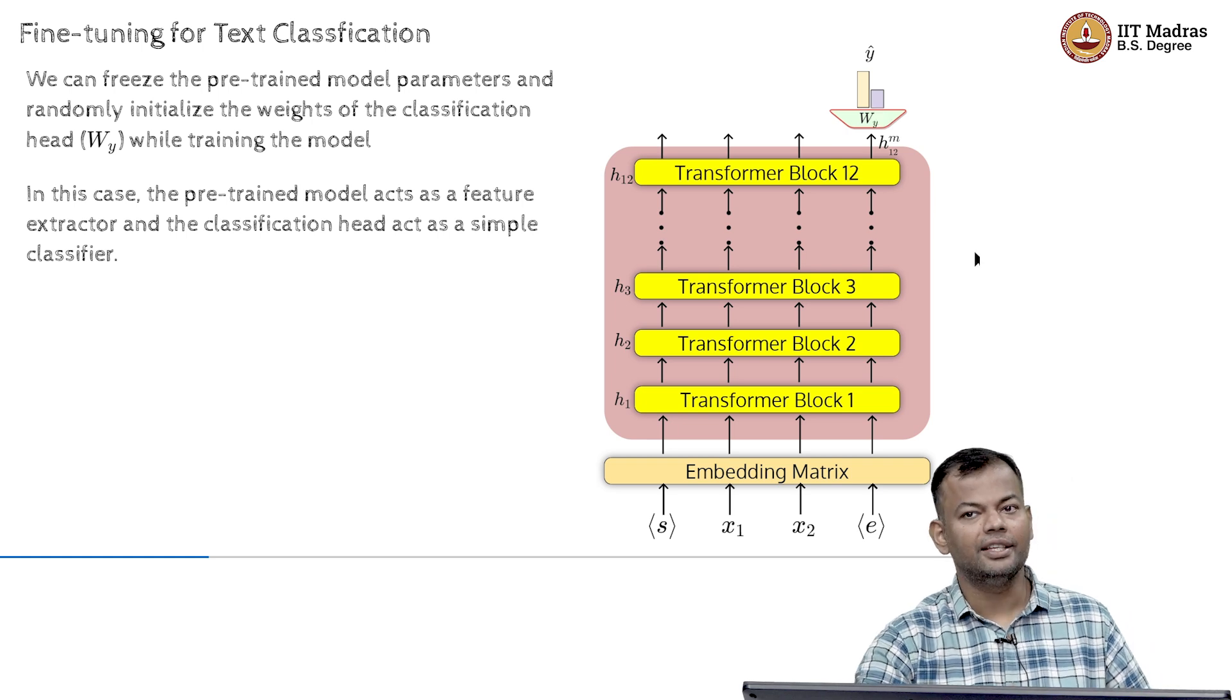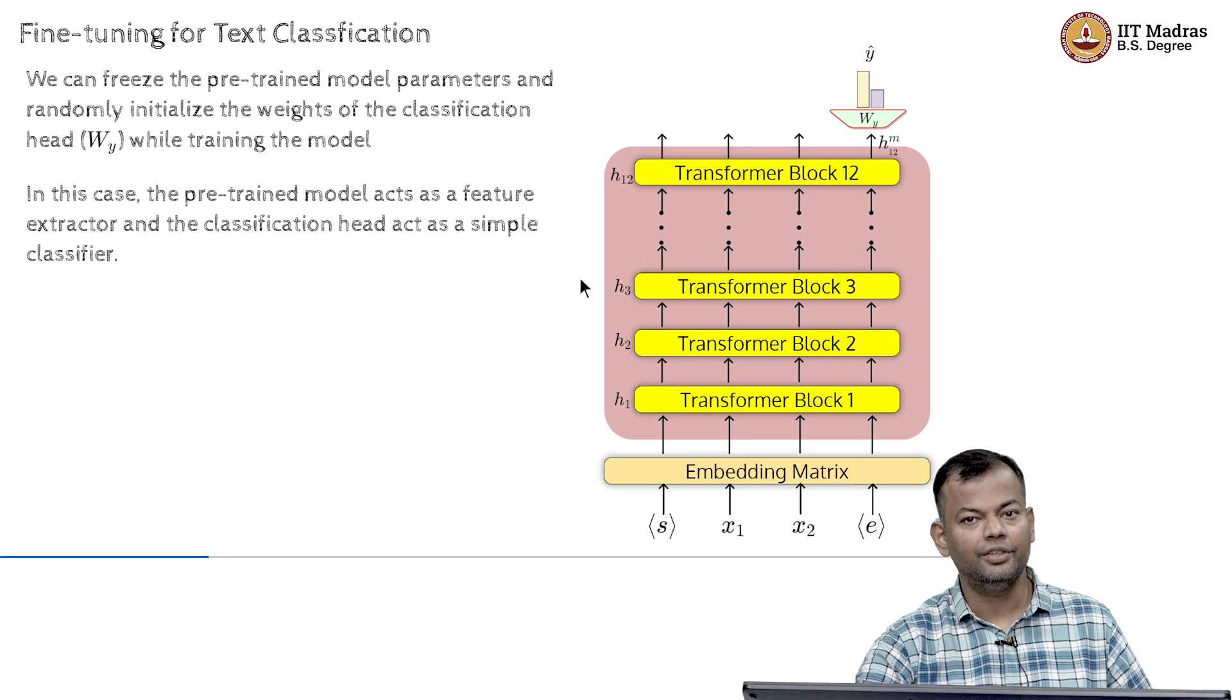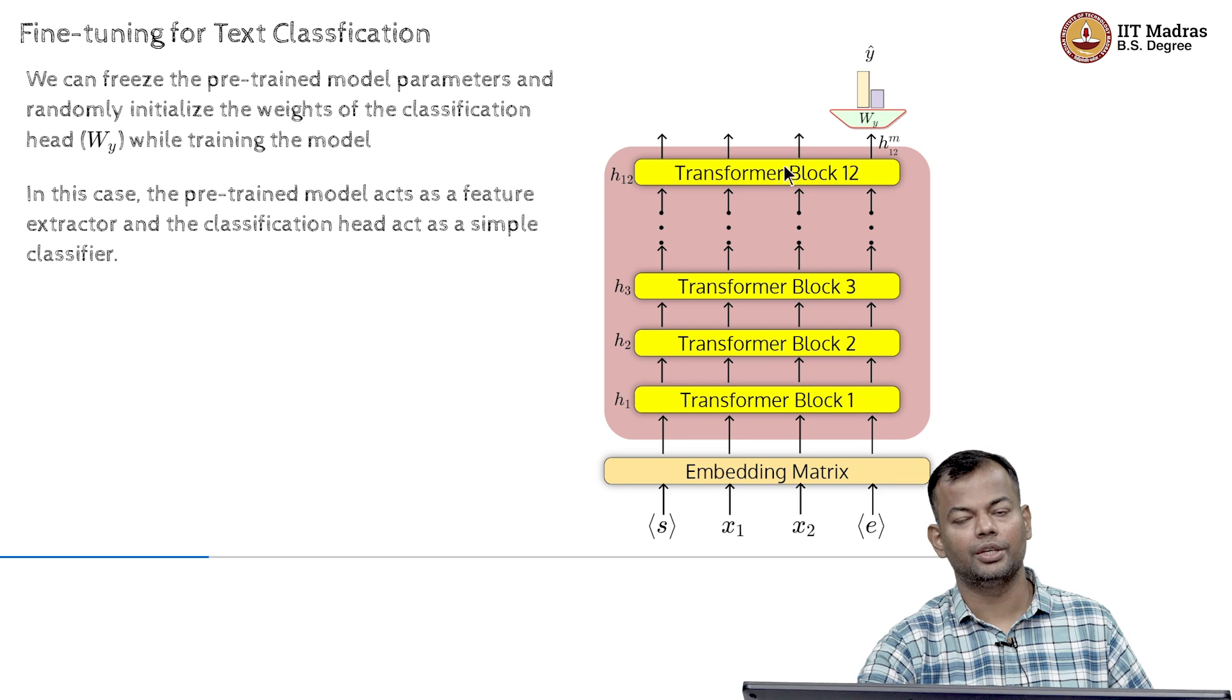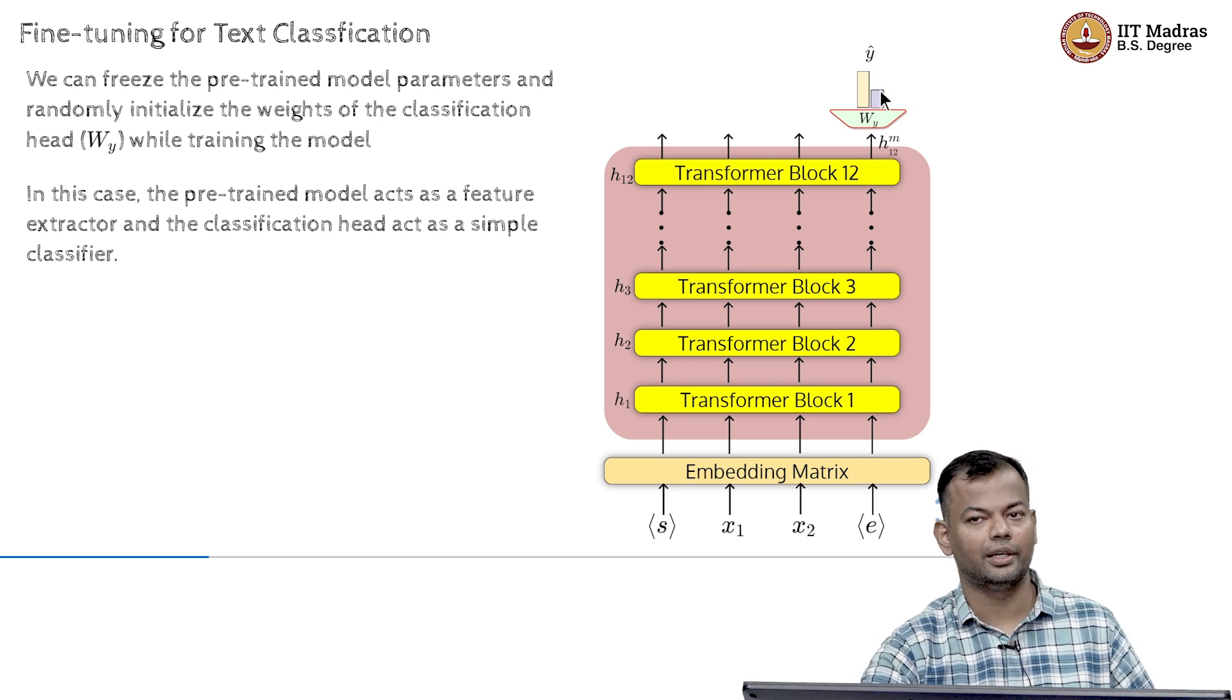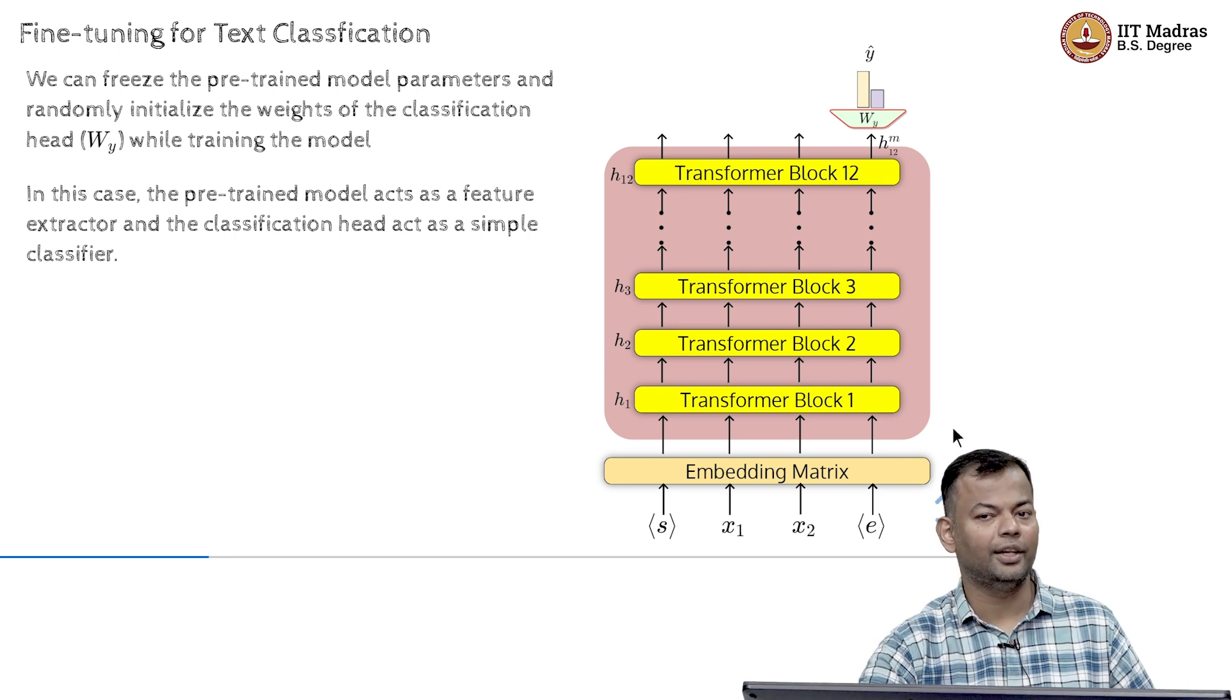And in that case, this pre-trained model is just acting as a feature extractor because you are passing the sequence, it is going through this entire forward propagation, all the computations are happening and at the end, you are getting a feature vector here and now based on that feature vector, you are doing the classification and only this part is what is getting trained.